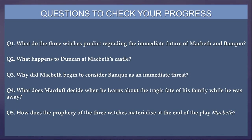This brings us to the questions to check your progress. Question number one: what do the three witches predict regarding the immediate future of Macbeth and Banquo? Question number two: what happens to Duncan at Macbeth's castle? Question number three: why did Macbeth begin to consider Banquo as an immediate threat? Question number four: what does Macduff decide when he learns about the tragic fate of his family while he was away? Question number five: how do the prophecies of the three witches materialize at the end of the play Macbeth?